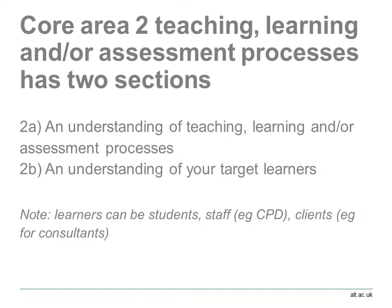The second core area is about teaching, learning, and/or assessment processes, and it has two sections. Two A is an understanding of teaching, learning, and/or assessment processes. Two B is an understanding of your target learners. A frequently asked question is whether learners must be students. In this instance, we interpret learning, teaching, and assessment processes to include CPD, staff support, HR support, learning and teaching services, librarians, technical roles, and similar. If you're not sure, please contact us for additional feedback.